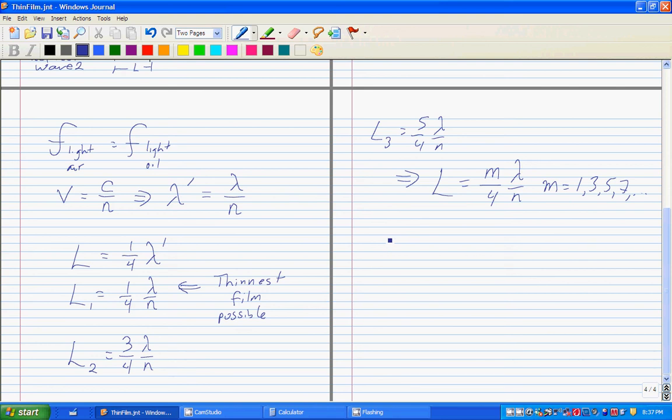Let's see what the thinnest film possible is. If we set m equal to one, we get one-quarter lambda over n, which, plugging in our numbers, is one-quarter of 337 nanometers.